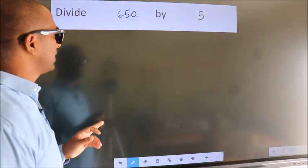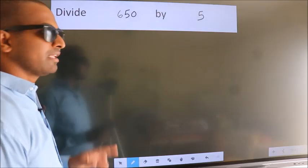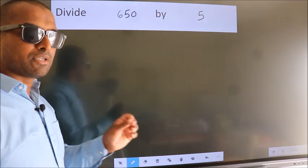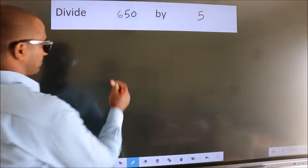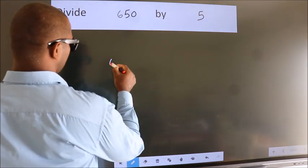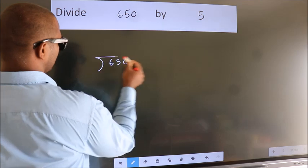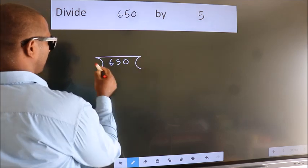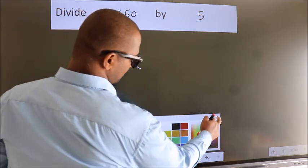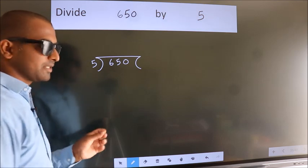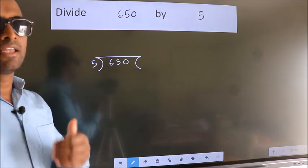Divide 650 by 5. To do this division, we should frame it in this way: 650 here, 5 here. This is your step 1.